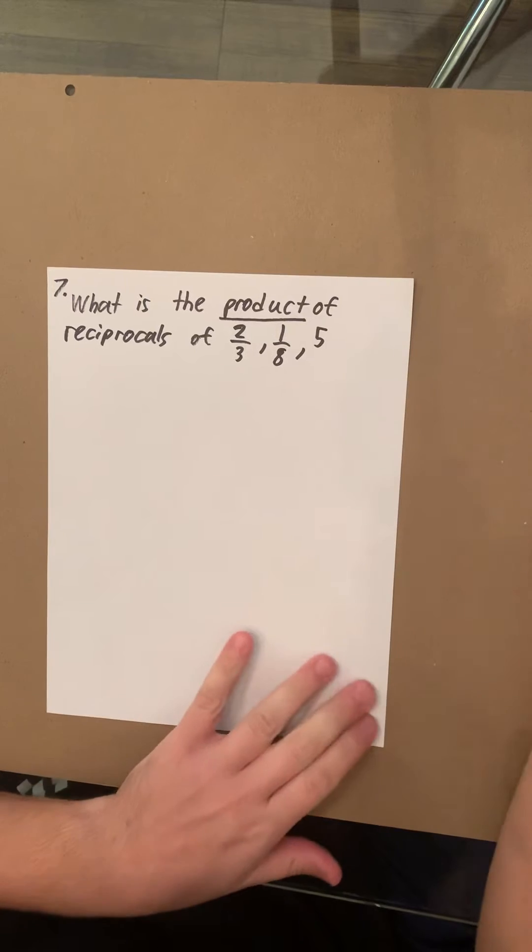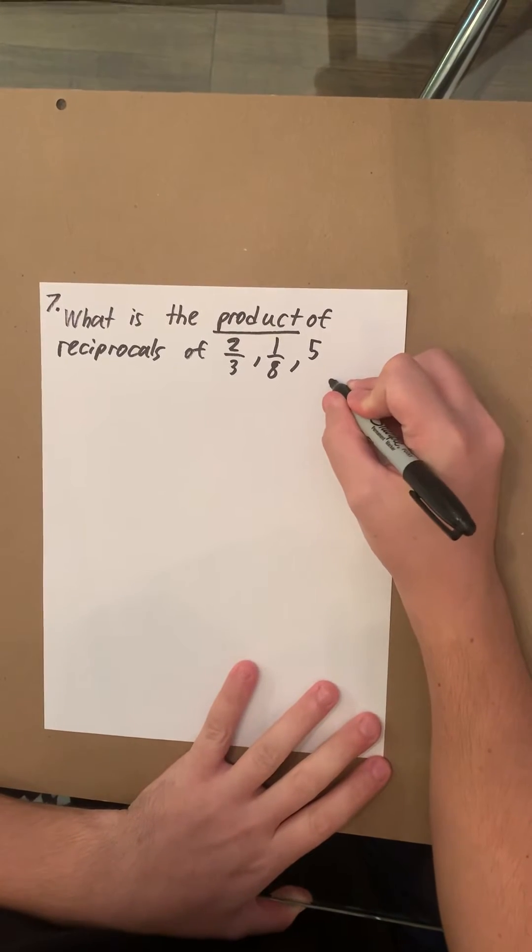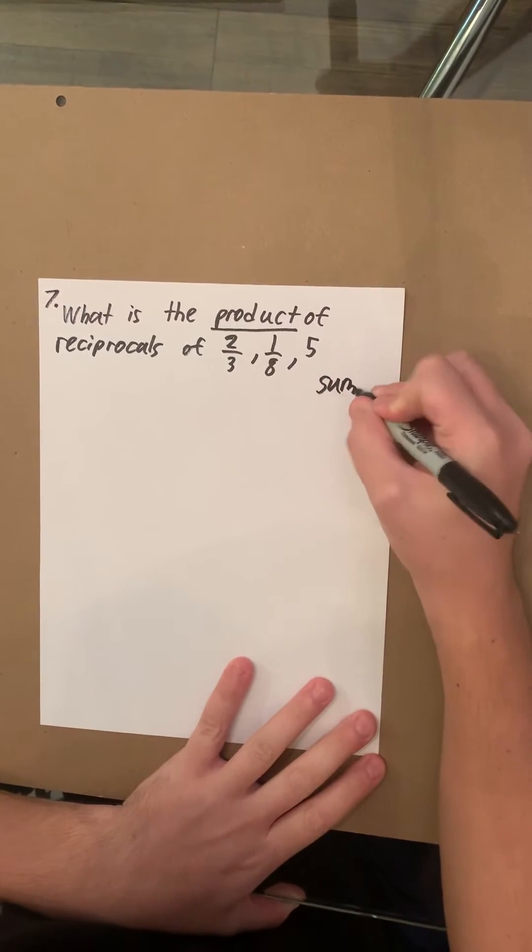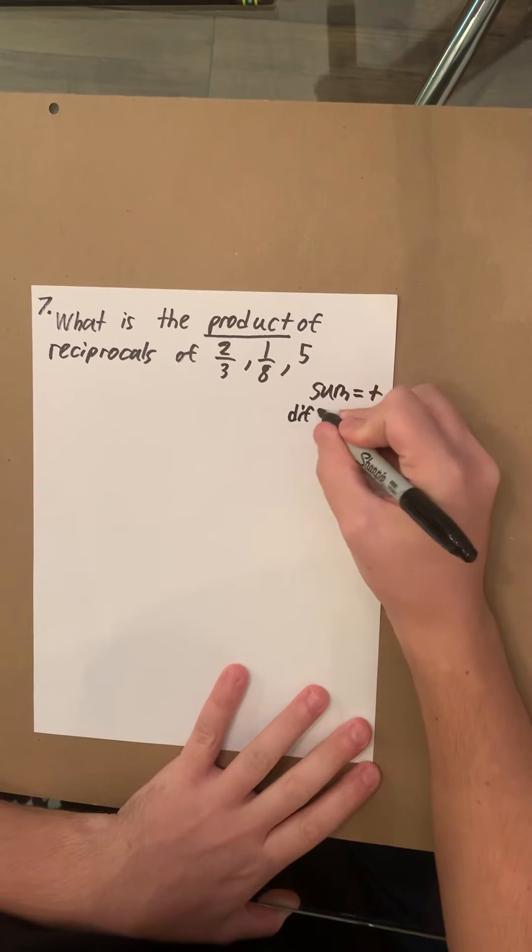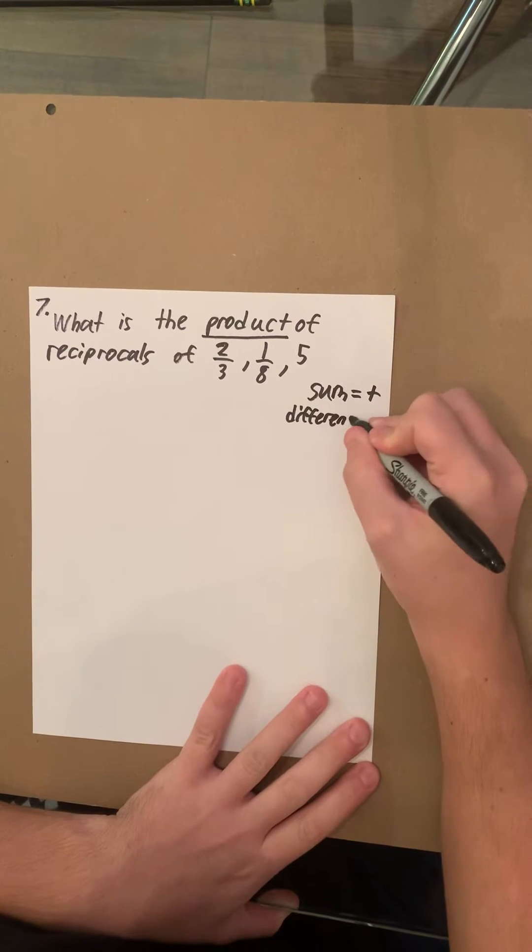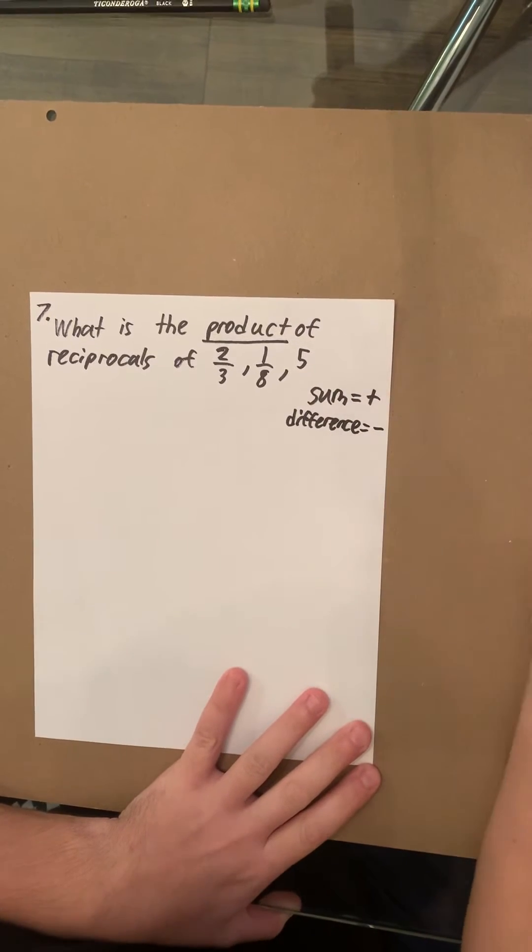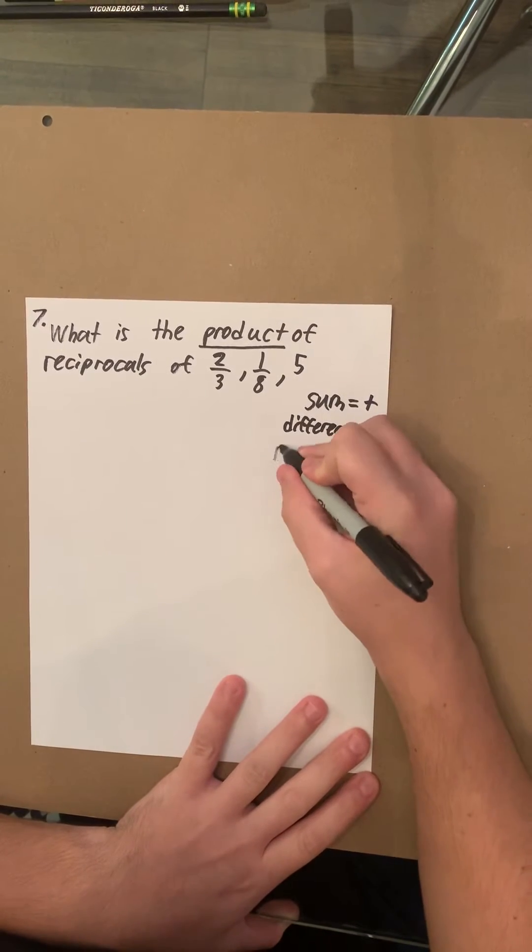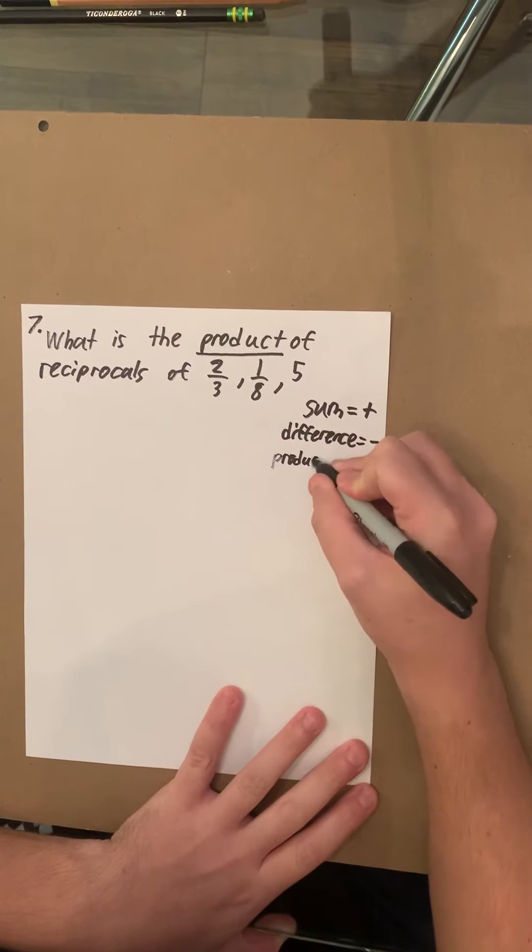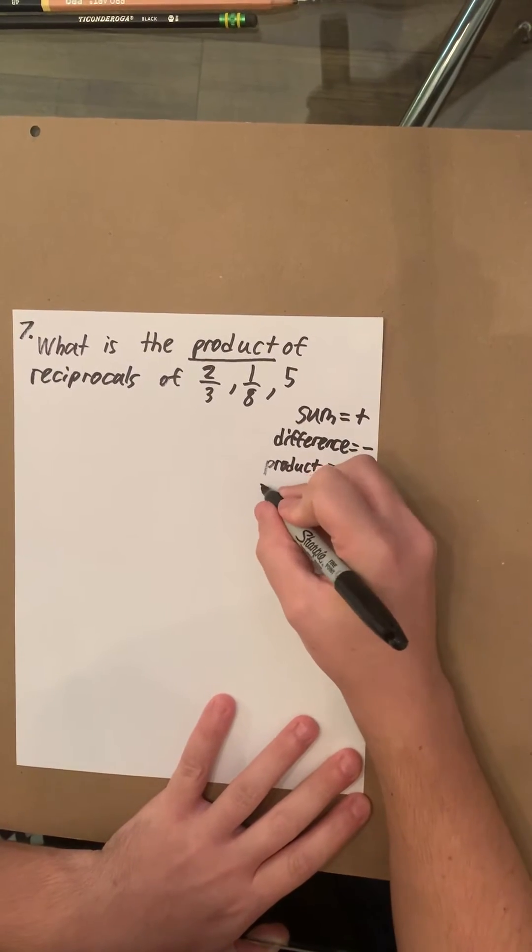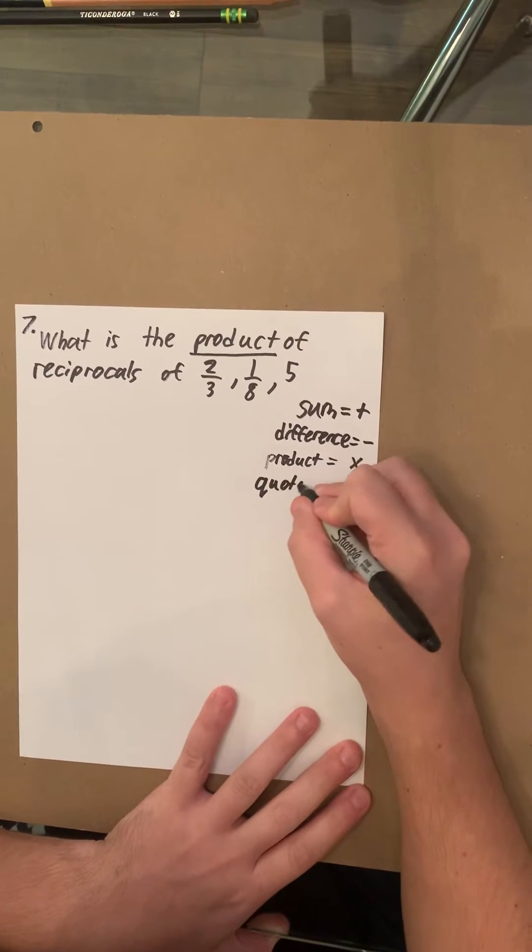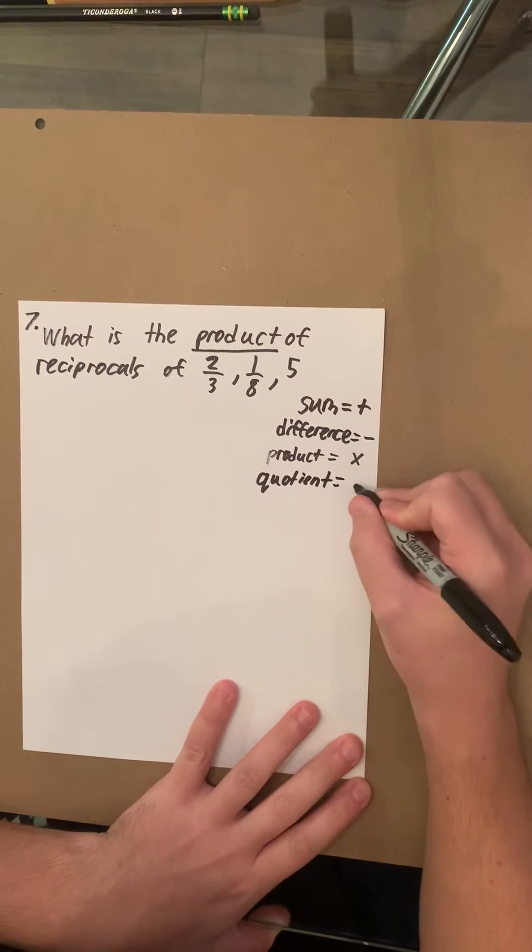And there actually is a little trick to this. If you see the word sum, it equals addition. If you see the word difference, it equals subtraction. If you see the word product, it equals multiplication. And if you see the word quotient, it equals division.